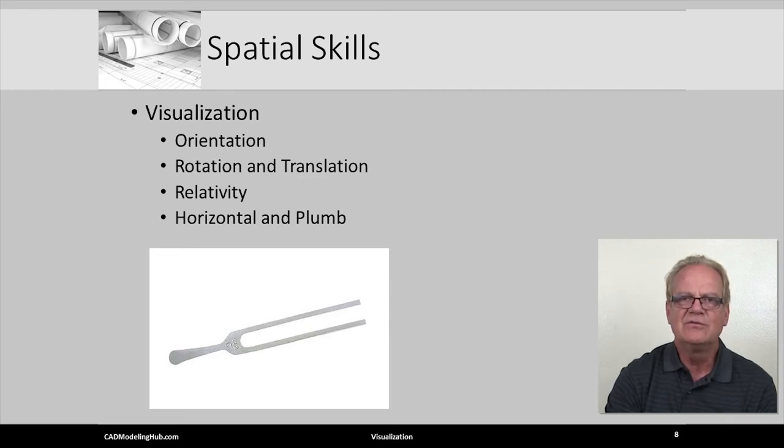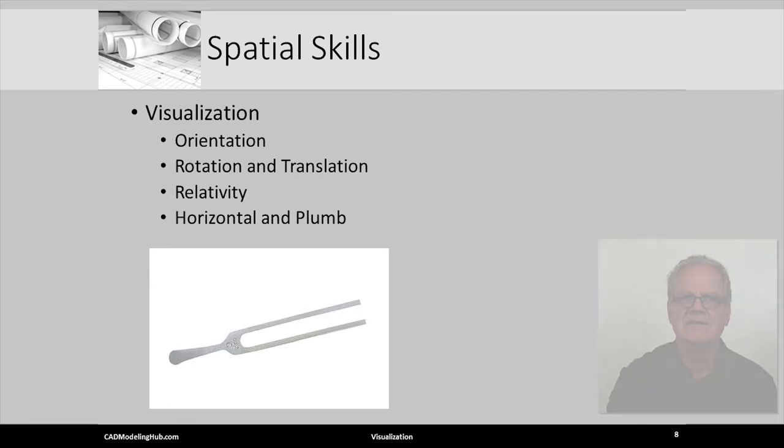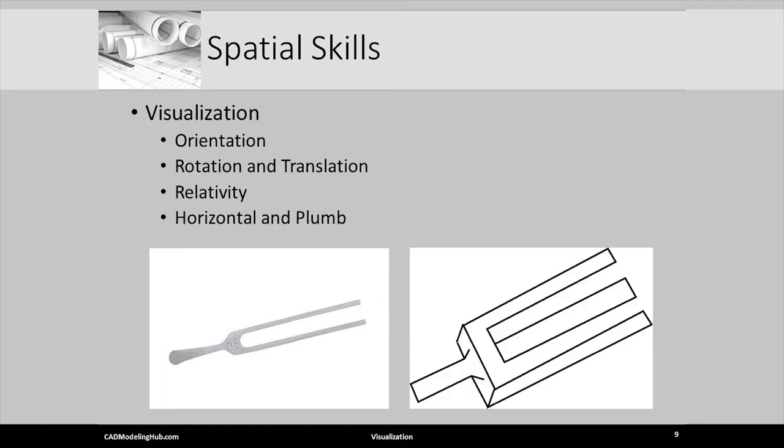Likewise, we can imagine what the scene would look like staring down the prongs of the tuning fork, without needing to do the physical rotation of the fork. In a similar way, our spatial skills should prevent us from creating this drawing of the tuning fork. That is, unless we are being asked to make an optical illusion.